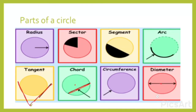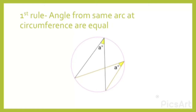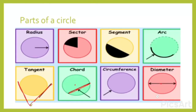Now let's look at the circle theorems. The first rule is that angles from the same arc at the circumference are equal. An arc is the curve on the circumference of the circle.